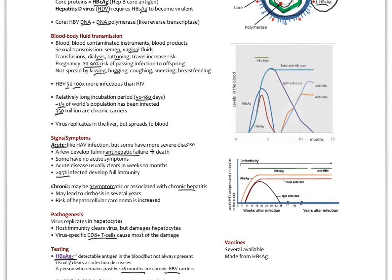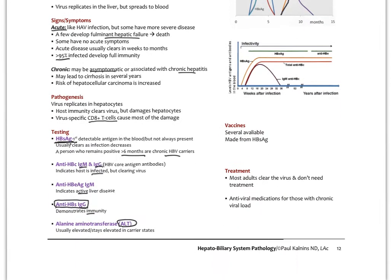You can see the different titers as they rise here. The anti-HB surface antigen IgG, that's going to hopefully rise and continue. That indicates that you have immunity at that point.